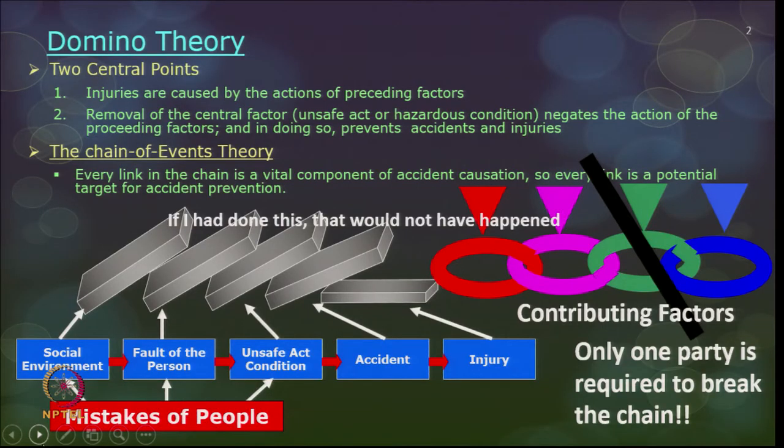We are going to focus on Bird's domino model because it is very close to many accidents that happen in construction sites. This theory has commonality with two theories under accident causation: domino theory and chain of events theory. In domino theory, a series of cards trigger one another resulting in an accident. In chain of events theory, interlinked oval links or factors called chains result in an accident.